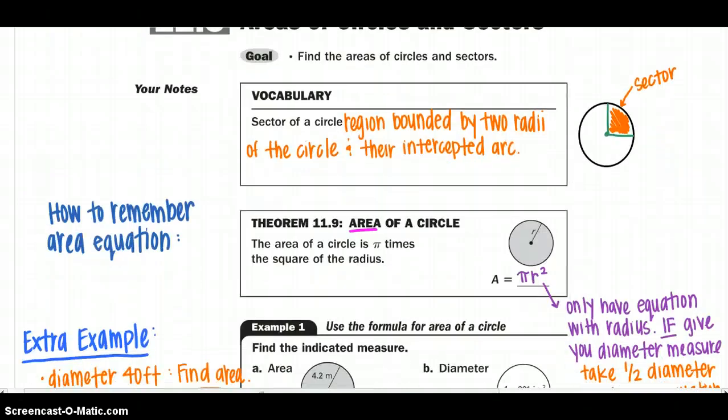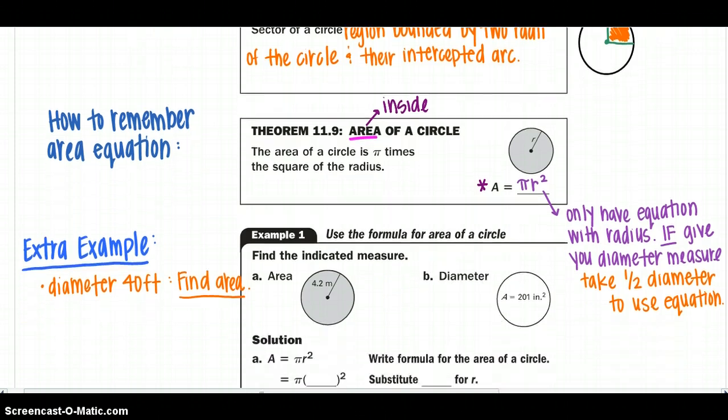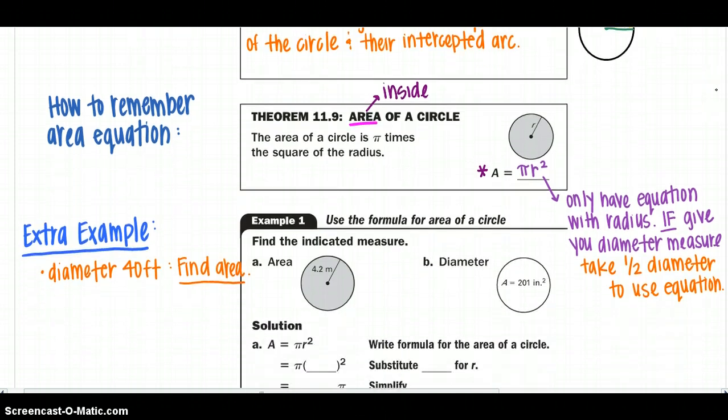Going down a little bit further to some information we already might know, theorem 11.9, the area of a circle. And again, you have to remember we are looking at area now. So what is the inside of your figure? And the area of a circle is pi times the square of the radius. So I have already wrote out the equation in terms of variables.